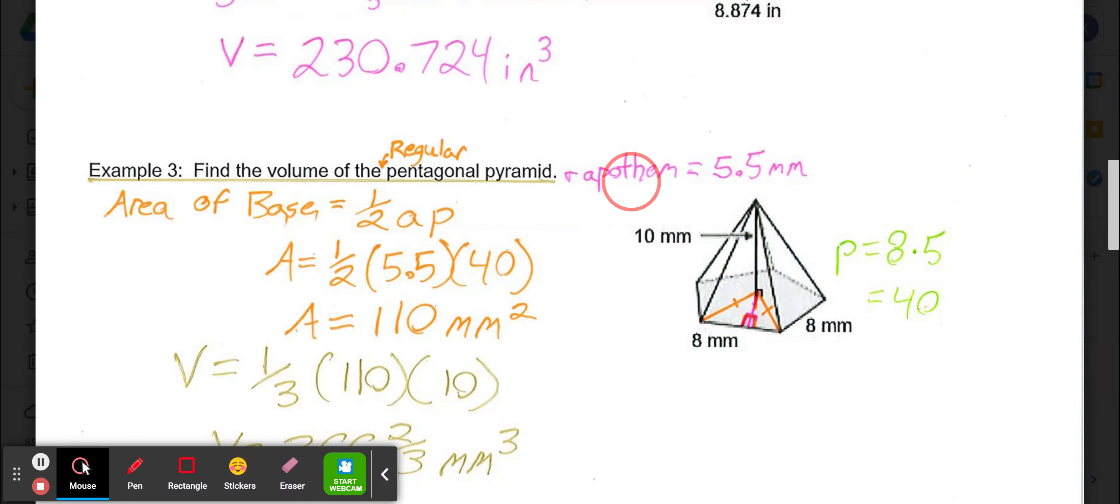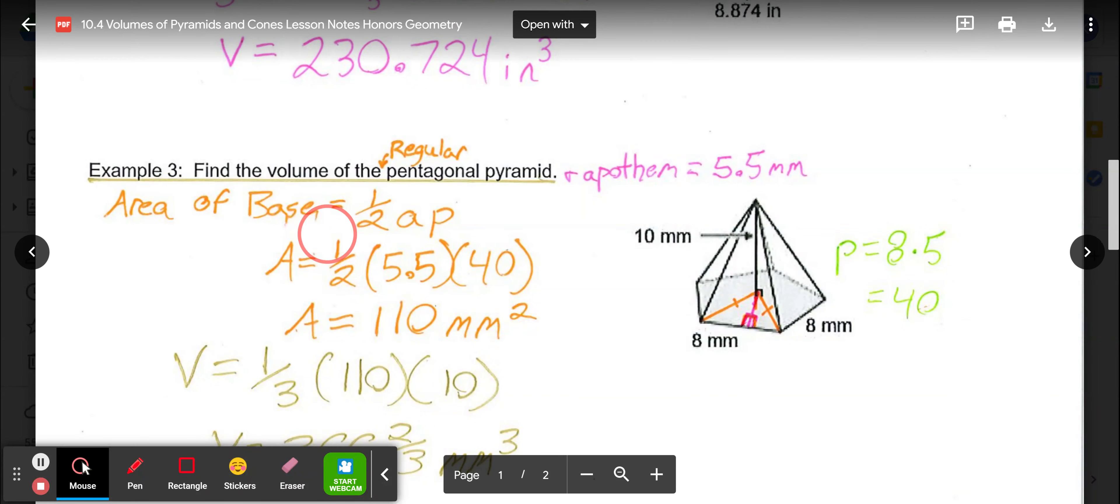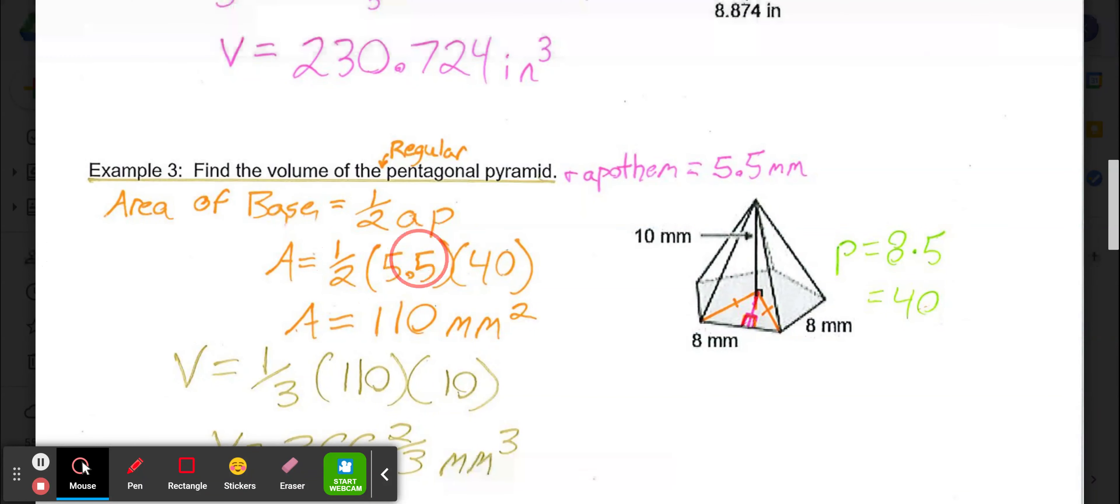I went in and did the math for you. I'm not worried about you finding the apothem length. The apothem of a regular pentagon with sides of 8 millimeters is approximately 5.5 millimeters. So for our apothem we'll use 5.5 millimeters. Area of our base, one-half multiplied by 5.5 multiplied by 40 gives us an area of 110 millimeters squared.